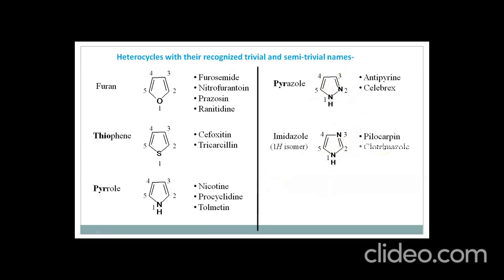Examples of drugs are pilocarpine, clotrimazole, and losartan. Pilocarpine is an example of a drug used in glaucoma, whereas clotrimazole is an antifungal drug and losartan is used as an antihypertensive drug. In this drug it has the imidazole ring, and as the first position has a hydrogen, it is a 1H isomer.